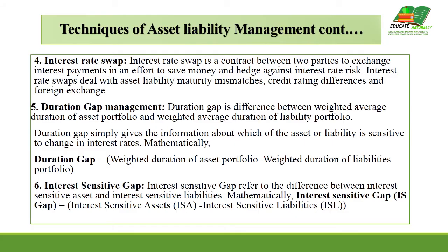The fifth technique is duration gap management, which means managing the gap between assets and liabilities. It includes the weighted average duration of the asset portfolio and the weighted average duration of the liabilities portfolio. Duration gap simply gives information about which of the assets or liabilities is sensitive to changes in the interest rate. The mathematical formula for the duration gap is: weighted duration of asset portfolio minus weighted duration of liabilities portfolio.